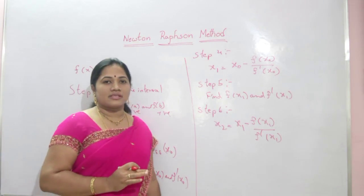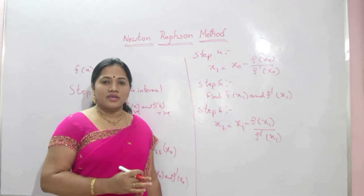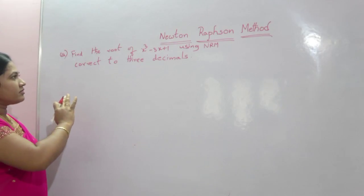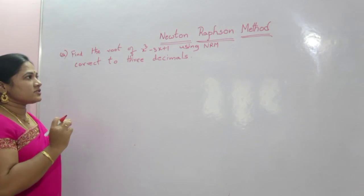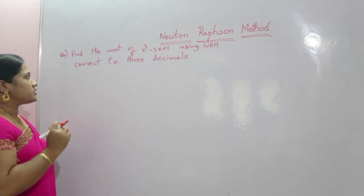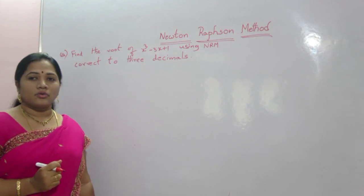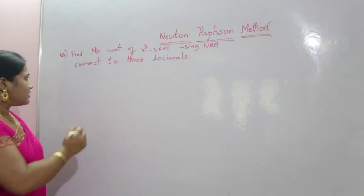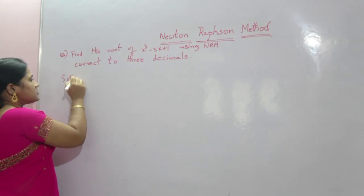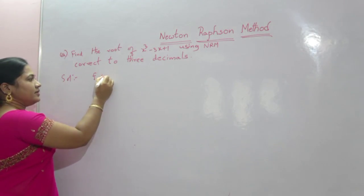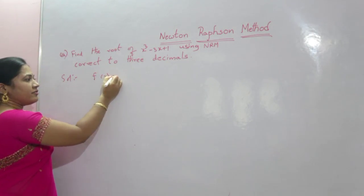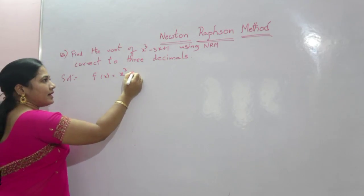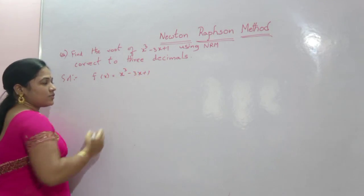Let me solve an example for easy understanding of the Newton-Raphson method. Find the root of x³ − 3x + 1 using Newton-Raphson method, corrected to 3 decimals. So, f(x) = x³ − 3x + 1.